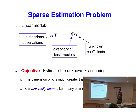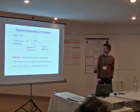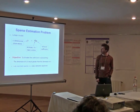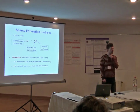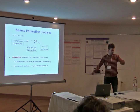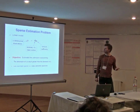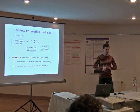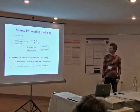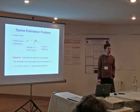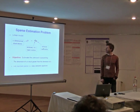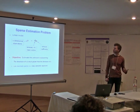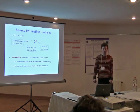The basic problem I'm looking at is just sparse estimation. Probably most people are familiar with this — just a linear model, an m-dimensional vector of observations y. Then you have a dictionary of basis vectors. In compressive sensing, this could include the measurement matrix and the sparsity transform. I'm just using it as a generic matrix of basis vectors. The key is that it's over-complete, so there are many more columns than rows. And then you have a known coefficient vector x. You can add noise to this model as well.